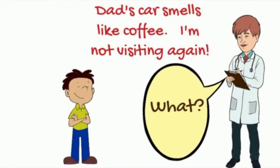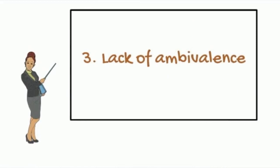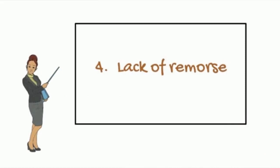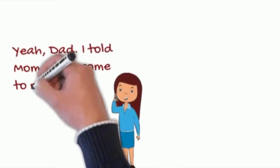Behavior three, lack of ambivalence. One parent is seen as all good, and the other is seen as all bad. There's no criticism at all of the favored parent. Behavior four, the lack of remorse for the shoddy treatment of a targeted parent, as if one parent gave the child permission to break the other parent's heart.